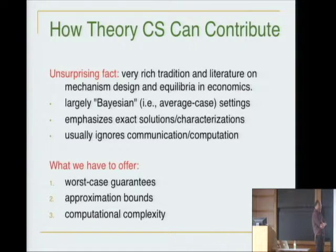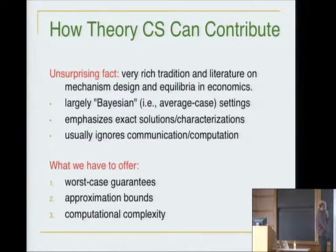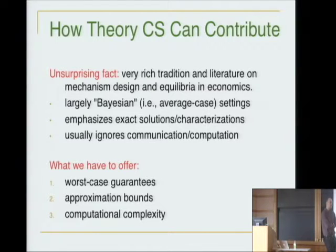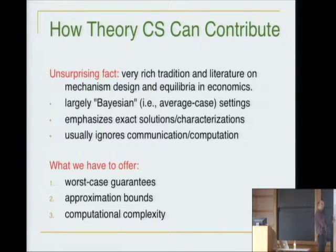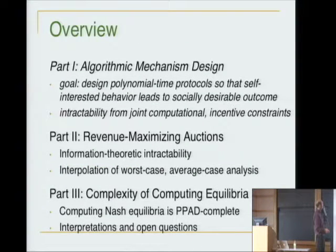There are lots of ways we can prove new results even about age-old economic applications. A final contrast is that we like to think about worst-case guarantees with minimal assumptions about inputs or distributions. In economics it's much more common to find exact solutions tailored to a particular setup. Robustness of worst-case guarantees is a final theme you'll notice throughout today.